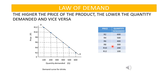Let us see if that is true. From the demand schedule, where the price is low, the quantity demanded is high. When the price is high, the quantity demanded is low. We can also see this using the demand curve: when the price is low, the quantity demanded is high; when the price is high, the quantity demanded is low. So the law of demand confirms: the higher the price, the lower the quantity demanded, and the lower the price, the higher the quantity demanded.